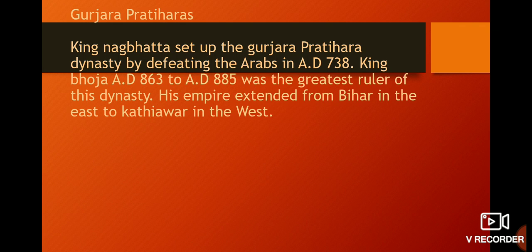The Pratihara rulers were patrons of art and learning. Raja Bhoj was himself a learned, kind, and just king. The Pratihara rulers built beautiful palaces and temples in Kanauj, and sent ambassadors to Baghdad in modern-day Iraq. This contact helped spread Indian philosophy, science, astronomy, and mathematics to West Asia.